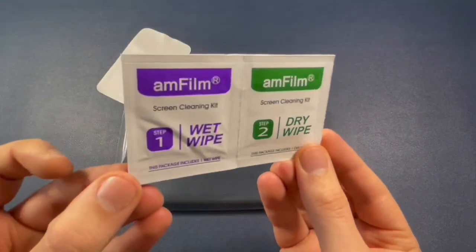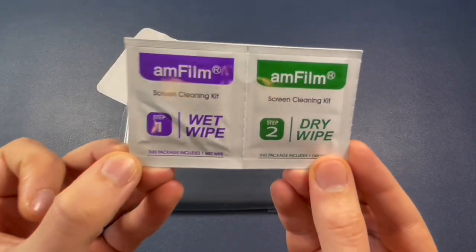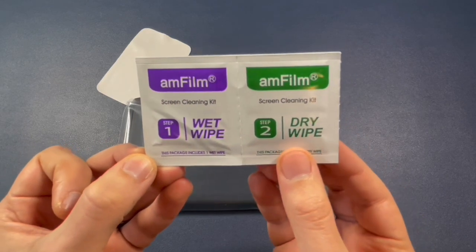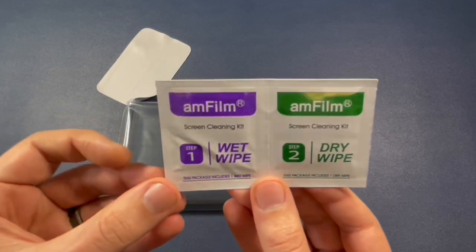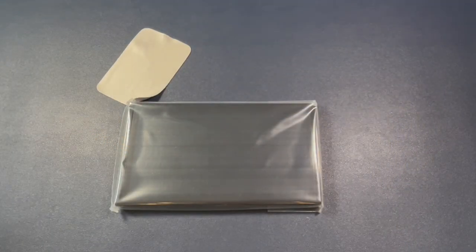So first, you want to hit it with the wet wipe to get all those dusts to stick to it. And then you want to use the dry wipe to wipe up any remaining dust that somehow found a way to stay on there. And then after that, you use the dust remover sticker. And then you put on the easy application tray.